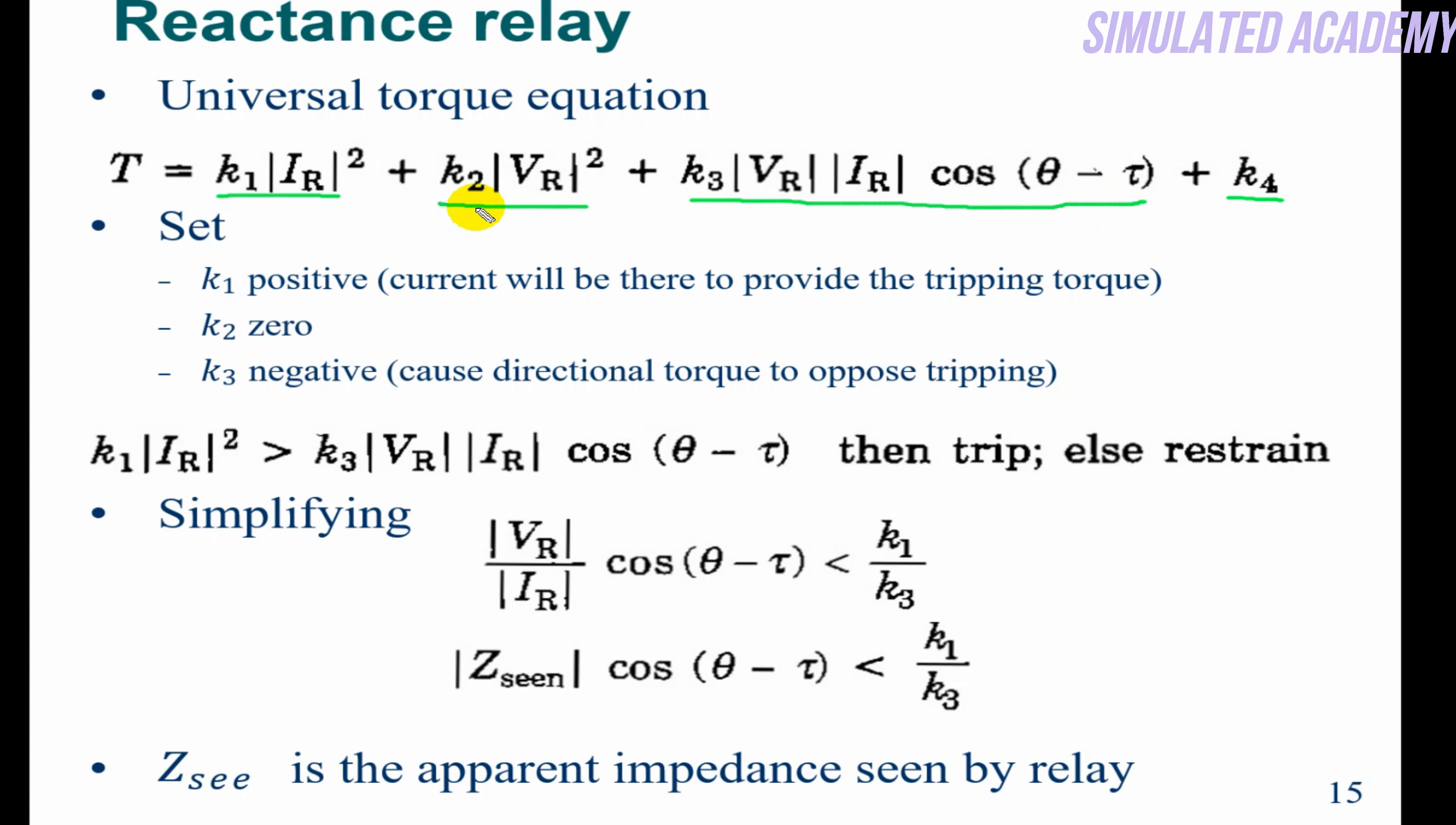For the reactance relay, the universal torque equation can be arranged such that k1 is positive, meaning k1 will act like an operating coil providing operating torque causing the relay to trip. k2 we set to zero, so there is no torque because of voltage. k3 we make negative, and it will be smaller than k2—this is restraining torque. So if k1|IR|² is greater than k3, this is the trip condition; otherwise it will remain restrained.